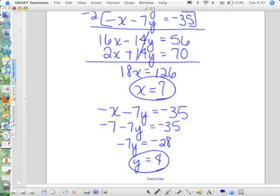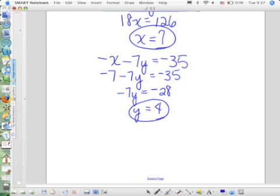Okay, so x is 7, y is 4. Now, what can I do? Go back to one of the original equations and sub x and y into it. Well, let's do the very first one. X plus 2y plus z equals 10.